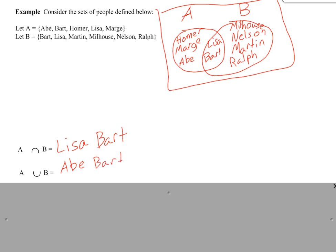Abe, Bart, Homer, Lisa, Marge, Martin, Milhouse, Nelson, and Ralph. Sweet. Okay. Hopefully you guys got that. Remember, A union B is the probability that one or the other occurs, or both. So, yeah.